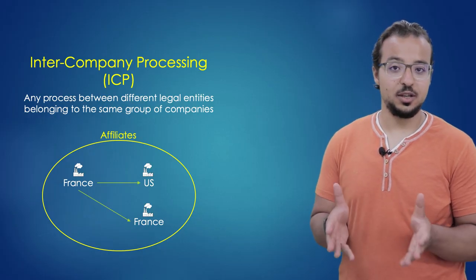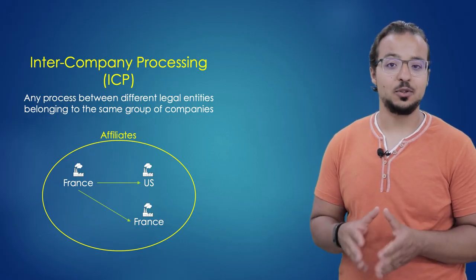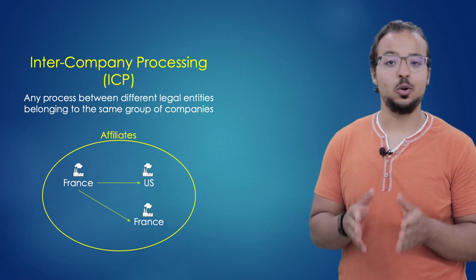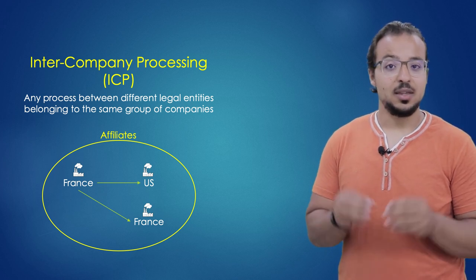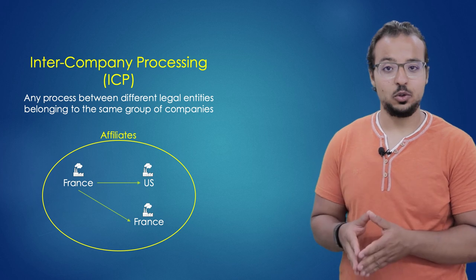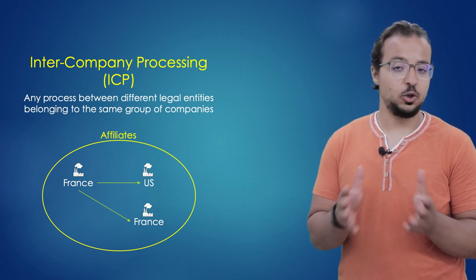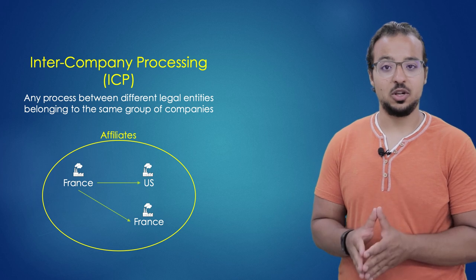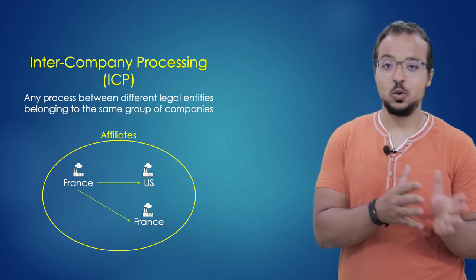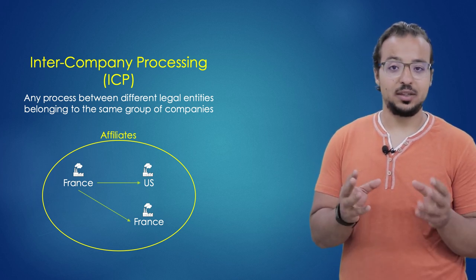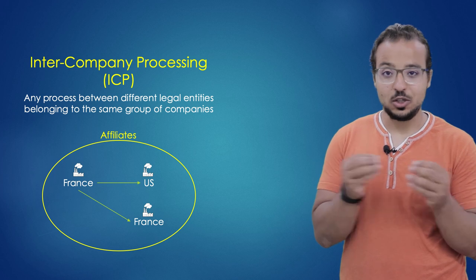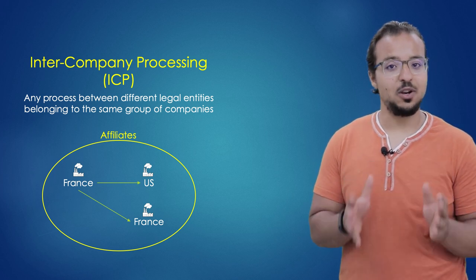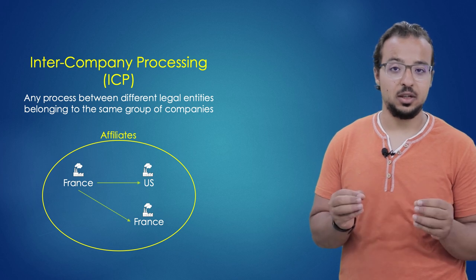Intercompany processing or ICP is any process that happens between two different legal entities that belong to the same group of companies. These two entities can be in the same country or in different countries. For example, if in our group of companies we have a branch in France and another branch in the US, any transaction that happens between these two different branches will be an intercompany process because every branch is a different legal entity.